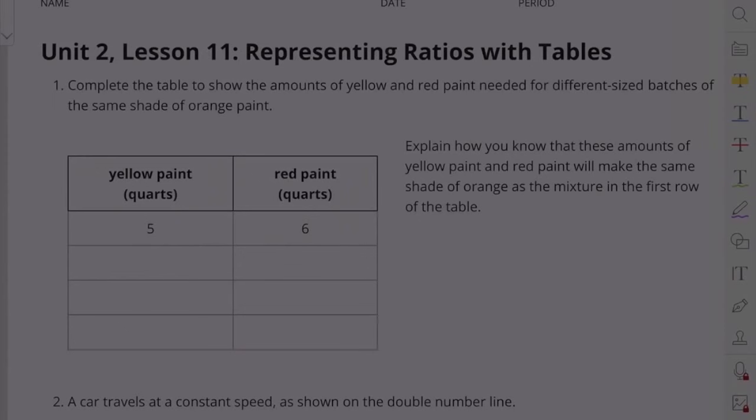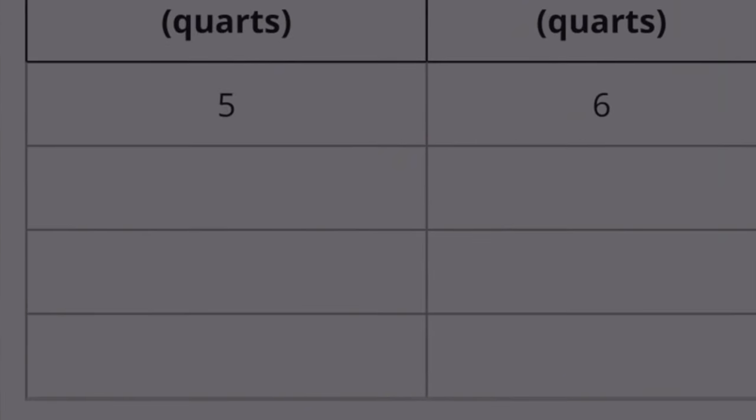Problem 1. Complete the table to show the amounts of yellow and red paint needed for different sized batches of the same shade of orange paint. Explain how you know that these amounts will make the same shade of orange as the mixture in the first row of the table. I'm simply going to count by 5s.